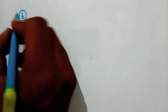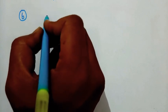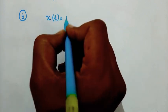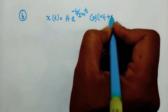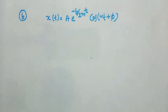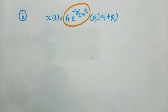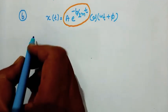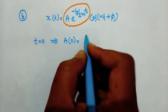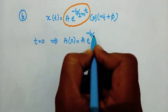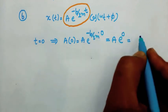For part two, for damped harmonic motion, x(T) equals A e to the power of minus B by 2M into T times cos(omega T plus phi). The amplitude is A e to the power of minus B by 2M into T. Initially at time T equals 0, the amplitude is A e to the power of minus B by 2M into 0, which gives e to the power of 0 equals 1, so the amplitude is A.